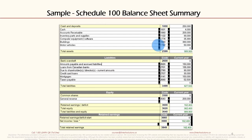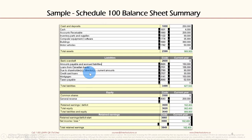Now looking at the liabilities: bank overdraft has GIFI code 2600 — zero in this example. Accounts payable and accrued liabilities — code 2620 — is $150,000. Loans from Canadian banks — code 2701 — is $55,000. Due to shareholders/directors current amount — code 2780 — is $90,000. Credit card loans — code 2707 — is $30,000. Mortgages — code 3141 — is $150,000. Taxes payable — code 2680 — is $50,500. Total liabilities is $627,500.